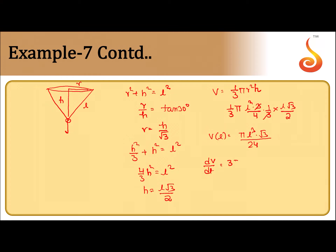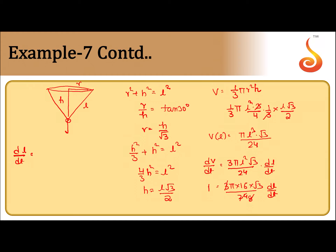Differentiating both sides with respect to t: dV/dt = (3π·l²·√3/24)·(dl/dt). The value of l is given as 4, so substituting: dV/dt = (3π·16·√3/24)·(dl/dt). Since dV/dt = 1, solving for dl/dt — 8 cancels with 24 and with 2 — we get dl/dt = 1/(2√3·π) centimeters per second.